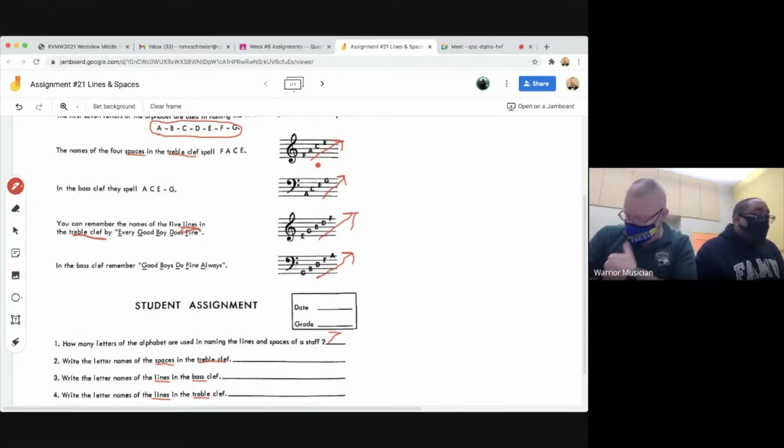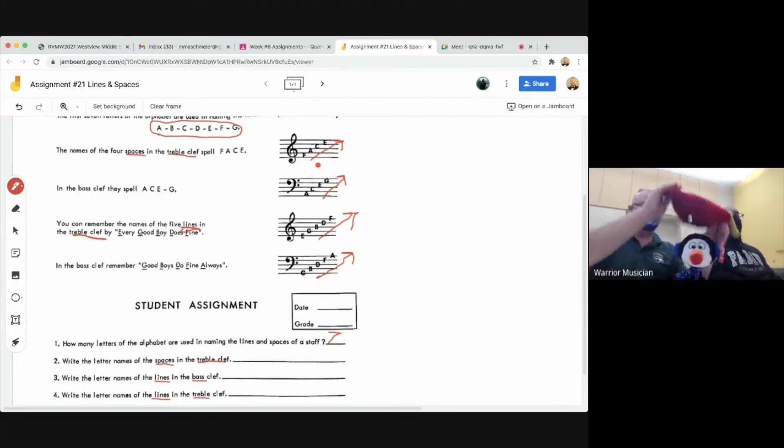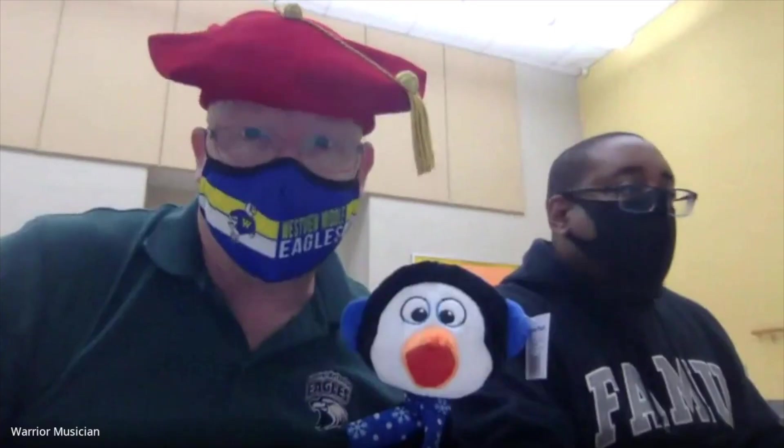So that's what it's actually asking you guys to do for question six. They want you to write the letter names of all of the lines in the spaces from line one to line five for both clefs. So that's treble clef. So you're going to have to do bass clef on your own. All right. We're going to take off here.